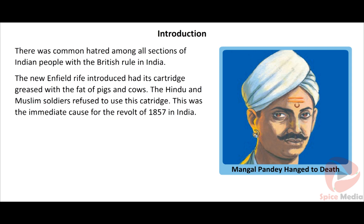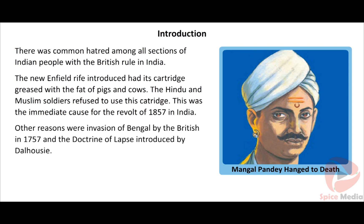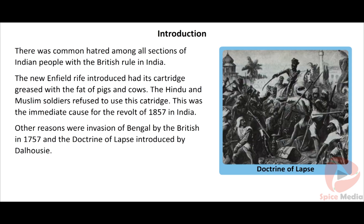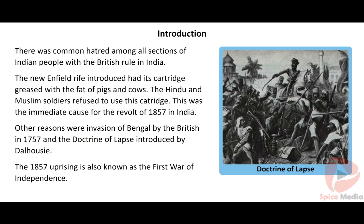Mangal Pandey was later executed on 9th May 1857, which sparked the revolt of 1857 in India. Other reasons included the invasion of Bengal by the British in 1757, the Doctrine of Lapse introduced by Dalhousie, and the setback suffered by Indian cottage industries and handicrafts due to the British Industrial Revolution. Indian culture and religious sentiments were also hurt. The participants of the revolt were individual rulers, sepoys, and civilians.